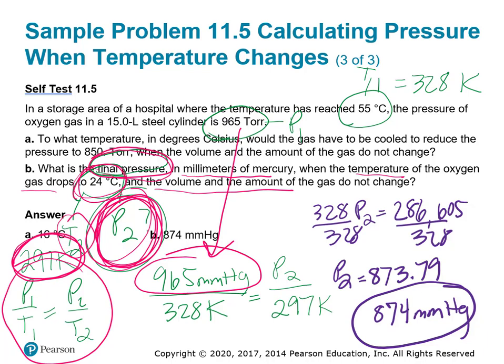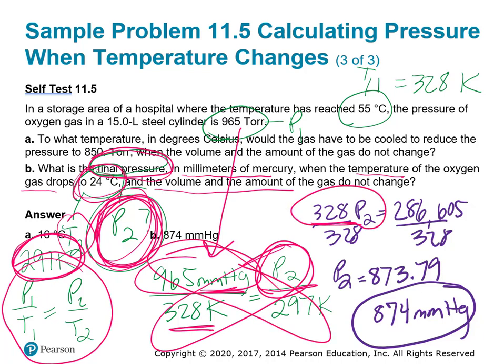If you look back at your cheat sheet, 760 torr equals 760 millimeters of mercury, so it's one-to-one. I made that 965 millimeters of mercury. We know our initial temperature equals P2 over T2. Cross-multiply, so 328 times P2, and cross-multiply here to get 286,605. We want P2 by itself, so divide both sides by 328. P2 gives 873.79, but with three sig figs, 874 millimeters of mercury.